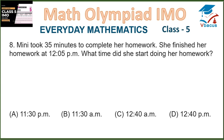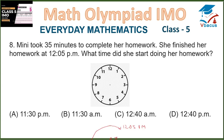Question 8. Minnie took 35 minutes to complete her homework. She finished her homework at 12:05 pm. What time did she start doing her homework? We have to go backward on the clock. At 12:05 pm she finishes the work, and if we go backward 35 minutes — 5, 10, 15, 20, 25, 30, 35 — it means it is 11:30 am. Option B is correct.